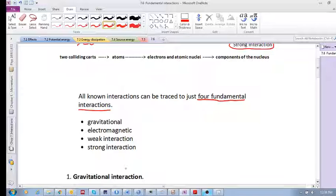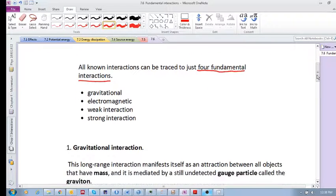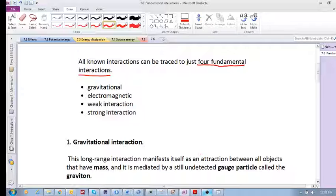The gravitational interaction is an interaction between objects that have mass. That is the attribute of this kind of interaction. Two objects that have mass would have this kind of attraction. It is long range, especially when we consider the stuff on the cosmic scale.